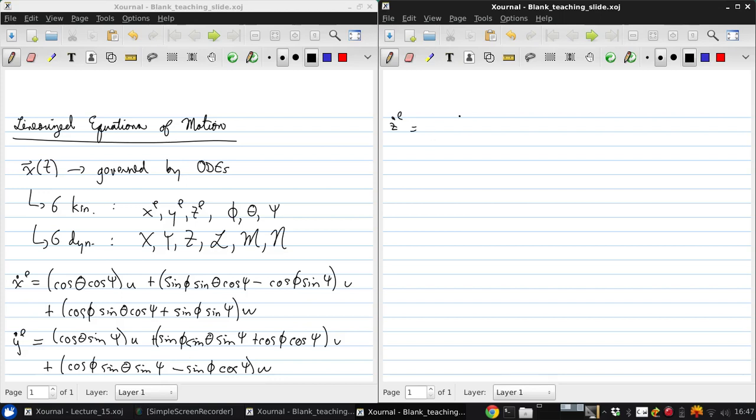And of course we can do the same for Y_E dot, where we just get sine theta times U plus sine phi cosine theta times V plus cosine phi cosine theta times W.